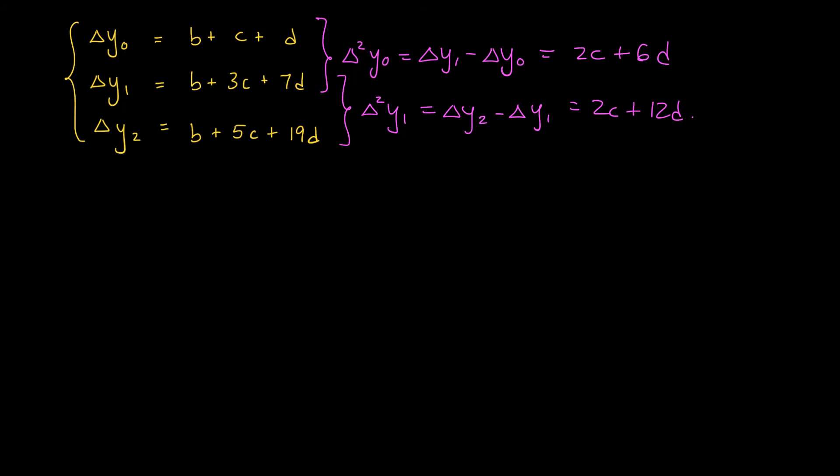But why stop there? Let's do it one more time to eliminate these c terms. When I subtract the first equation from the second I'm really taking differences of my second finite differences, so I'll call that my third finite difference. I'll define delta cubed of y0 to be delta squared of y1 minus delta squared of y0. I'm just left with 6d.